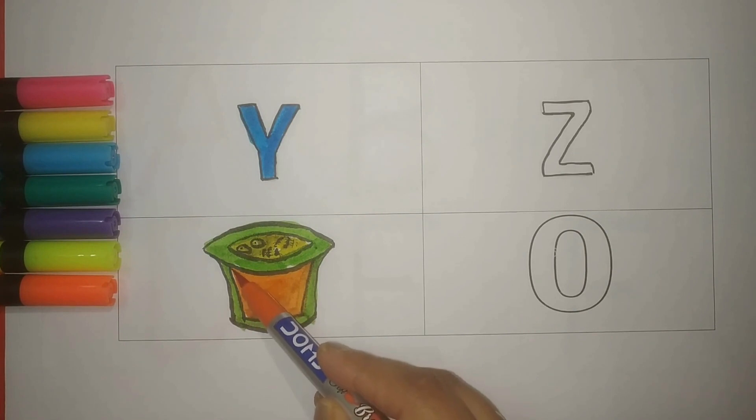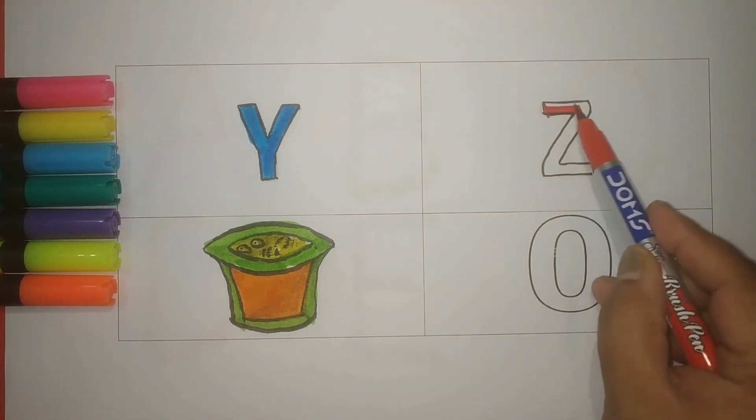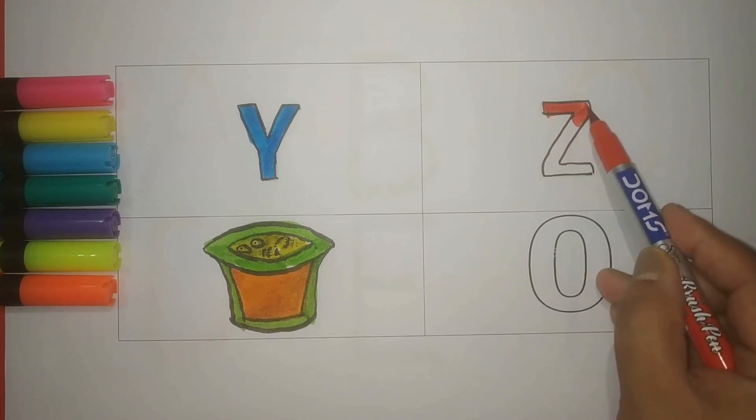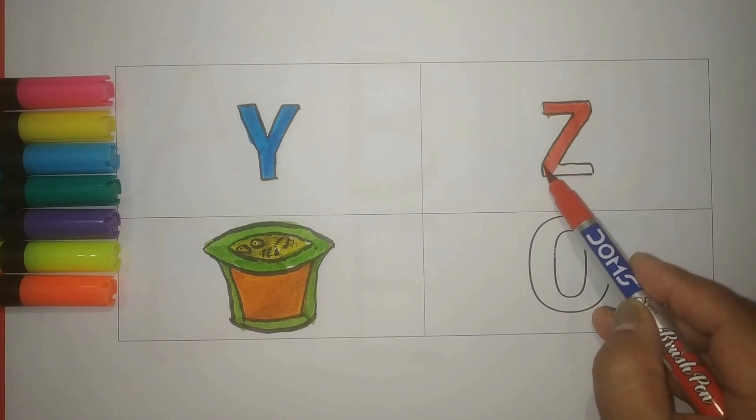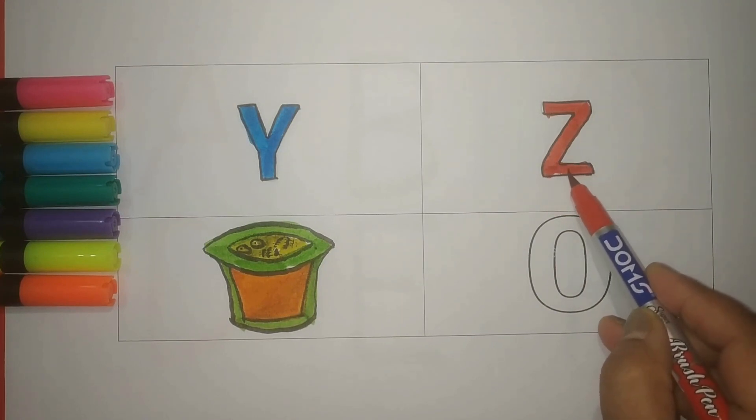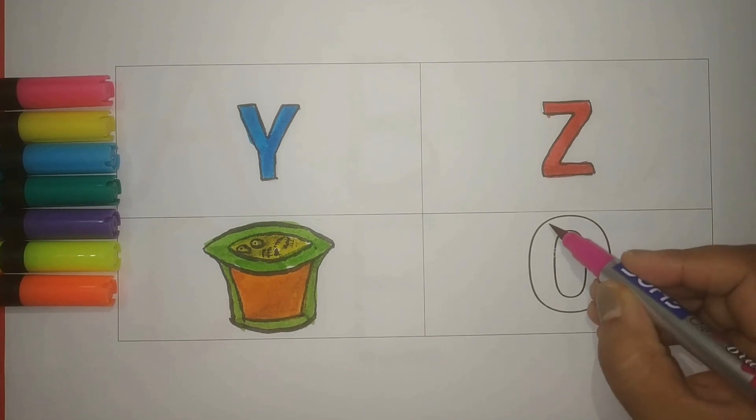And Y for yark. Orange color, red color. Z, Z for zero. Red color. What other words start with the letter Z? Z is red. Zebra.